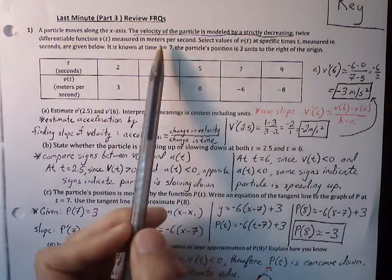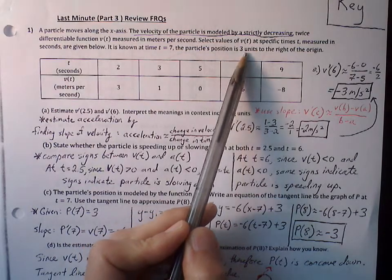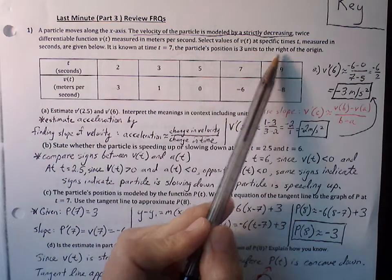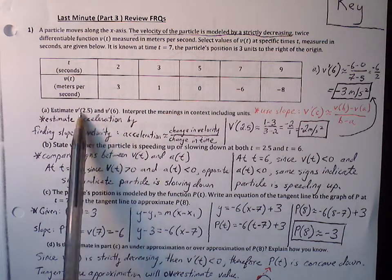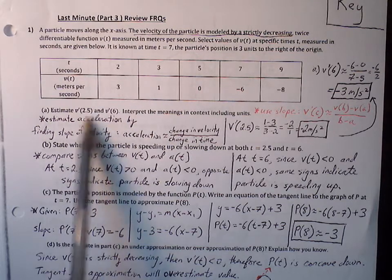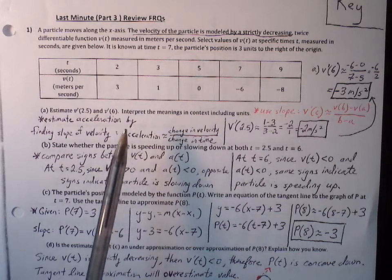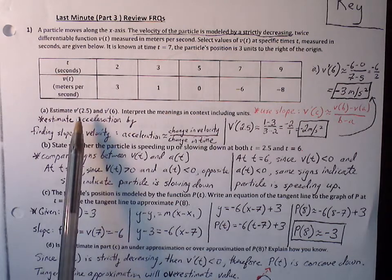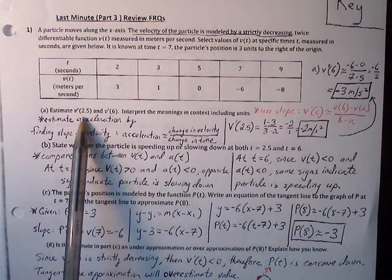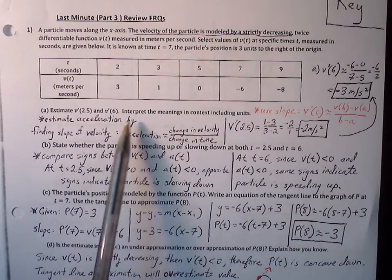It is known that at time t equals 7, the particle's position is 3 units to the right of the origin. Part A: estimate v prime of 2.5 and v prime of 6. Now v prime is the derivative of velocity, which is really acceleration. So it's not asking for the exact value of acceleration — it's asking for an estimation. The definition of acceleration is rate of change of velocity over change in time, so we're looking for approximations.